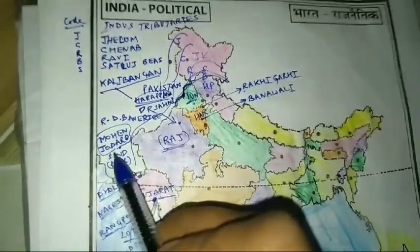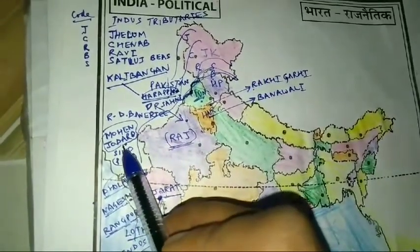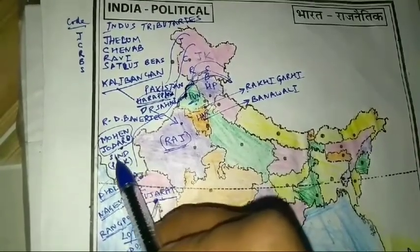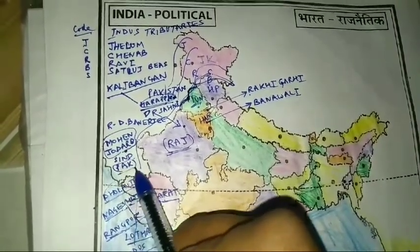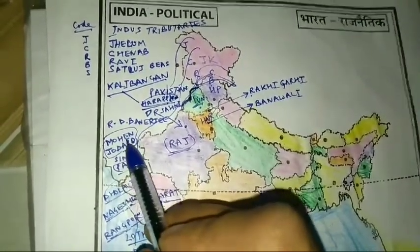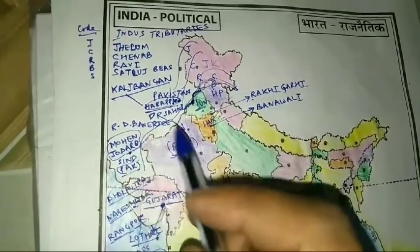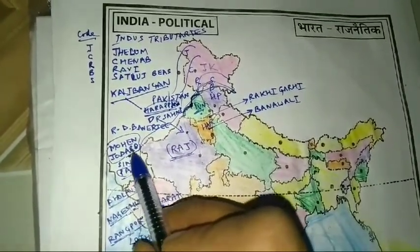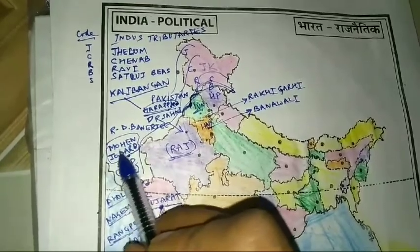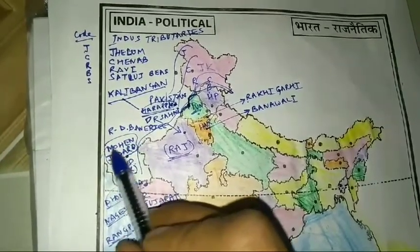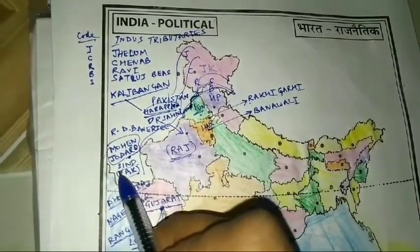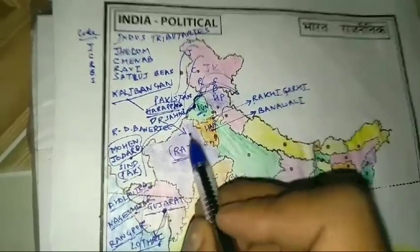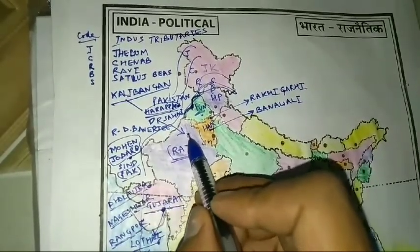Another major city of Harappan civilization was Mohenjo-daro. This is in present day Sindh, Pakistan. This is Rajasthan and just adjacent to this area is Mohenjo-daro, present day Pakistan in the Sindh area. Now Kalibangan — it is in Rajasthan.